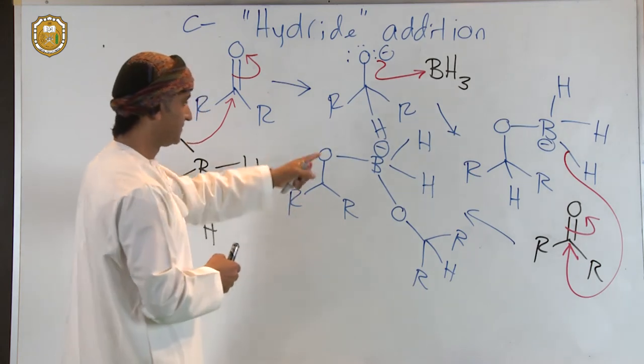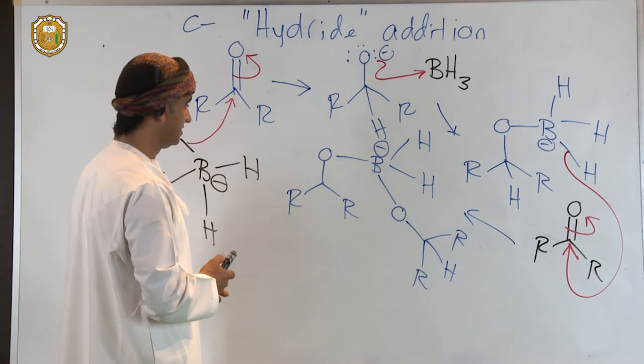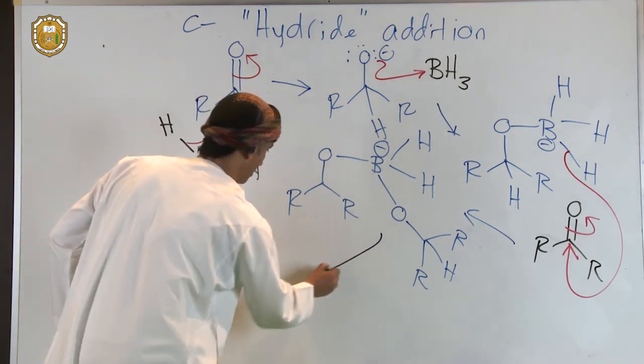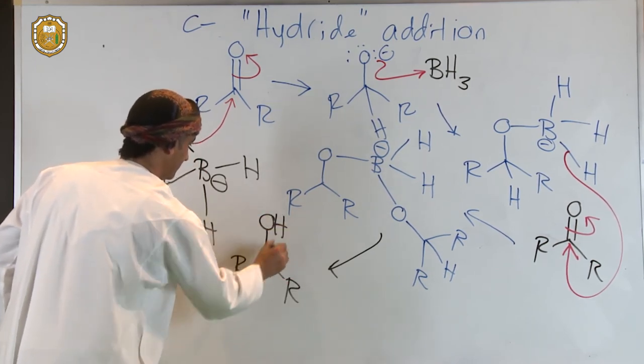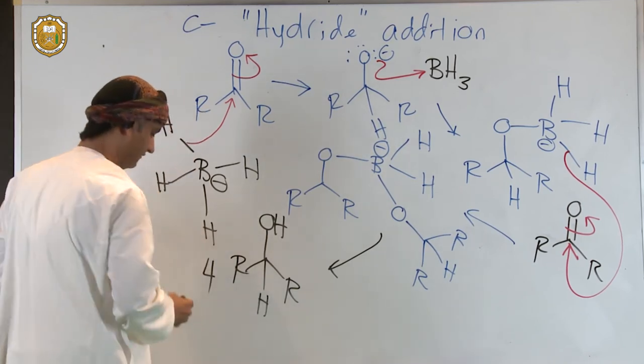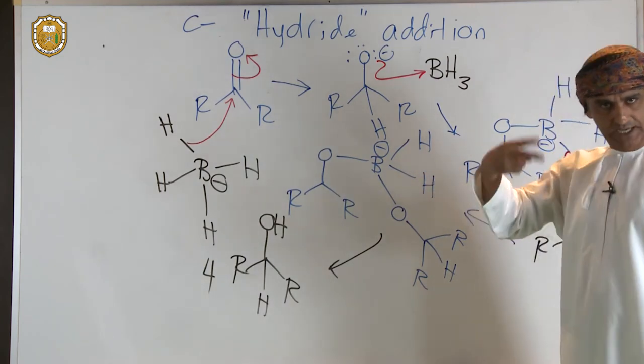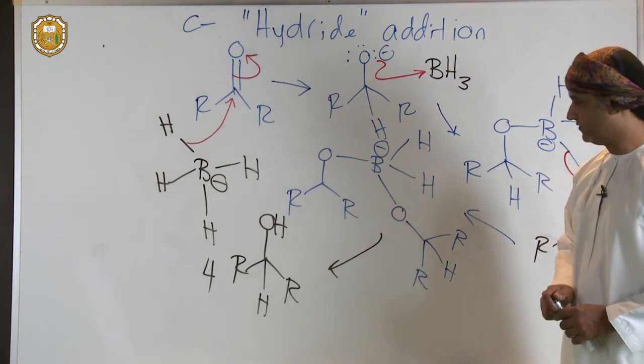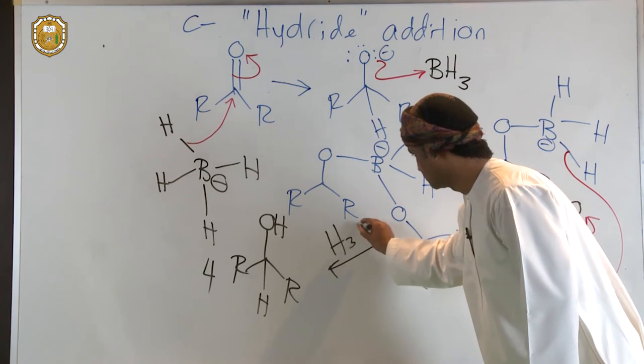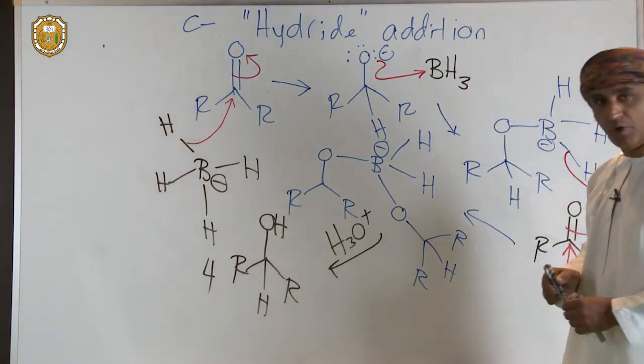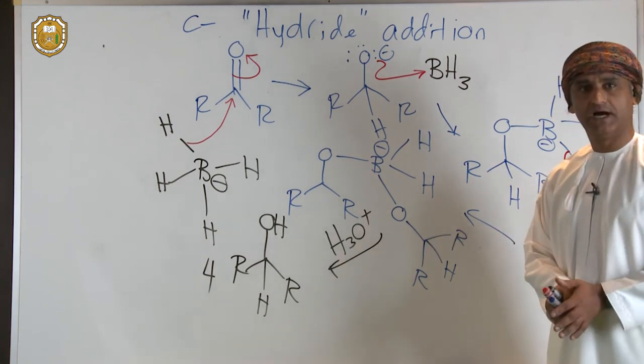Now, in the next protonation step, such intermediate or after the reaction with two moles, with further two moles of the ketone, we get the final alcohol product. And there should be four of them, assuming that these hydrides now react with additional two moles of the ketone. So in the final protonation step with the hydronium ion, each oxygen-boron bond gets broken up. In other words, the oxygen gets protonated to form the final alcohol product.